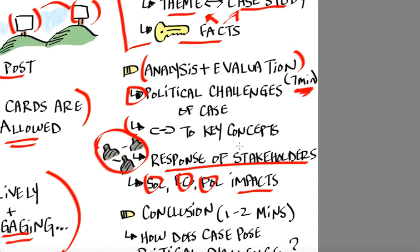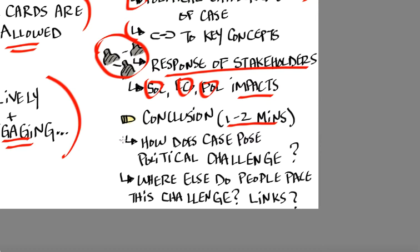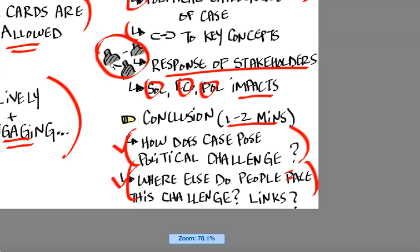Lastly, the conclusion should be one to two minutes. How does this case pose a political challenge? That question should be answered. And where else do people face this challenge, and different links to other things that are going on in the world. So just to tidy things up — it's quite an involved piece of work, but doable.